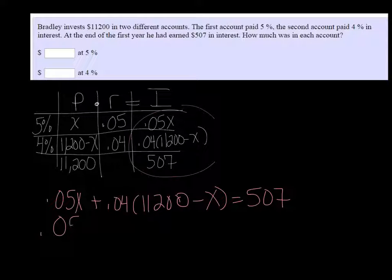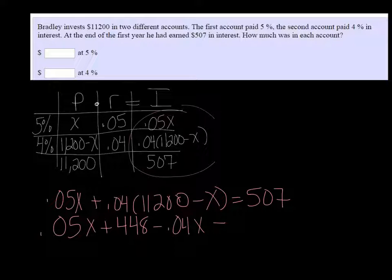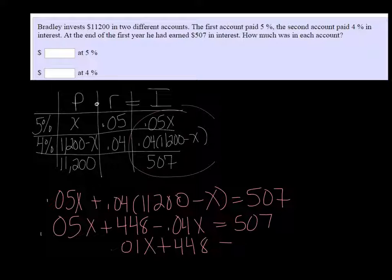So we have 0.05X. And then 0.04 times 11,200 is 448. And then minus 0.04X equals 507. Combining my X's, I get 0.01X plus the 448 equals 507. And I can subtract 448 from 507, which is 59.